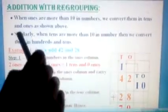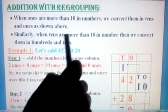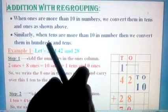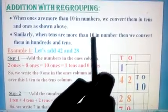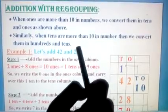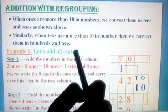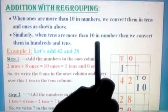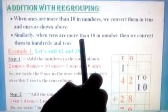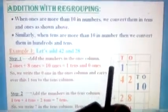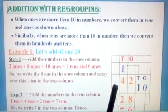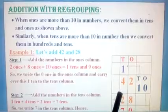Similarly, when tens are more than 10 in number, then we convert them in hundreds and tens. So the tens also will have carryover. That should be split into tens and hundreds. Shall we see the first example now? When I teach you the first example, you will know the meaning of this sentence. Please be very alert when I teach you with regrouping. Since it is with carryover, you should listen very carefully.